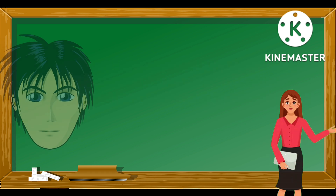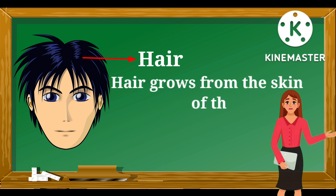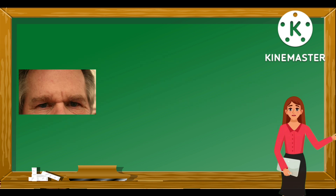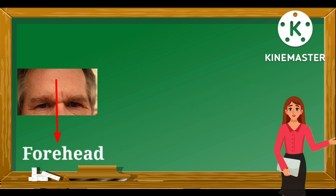This is called human hair — H-A-I-R. Hair grows from the skin of the human body. It is mainly made up of proteins, which is called keratin.